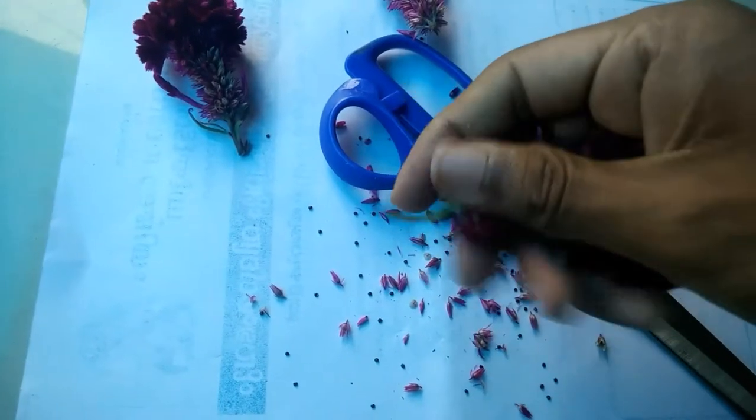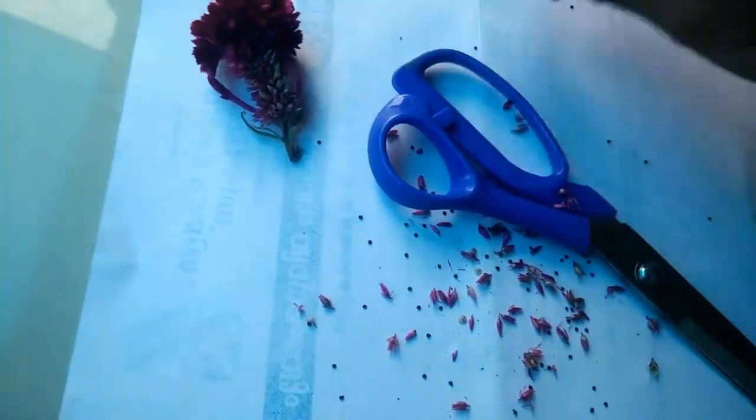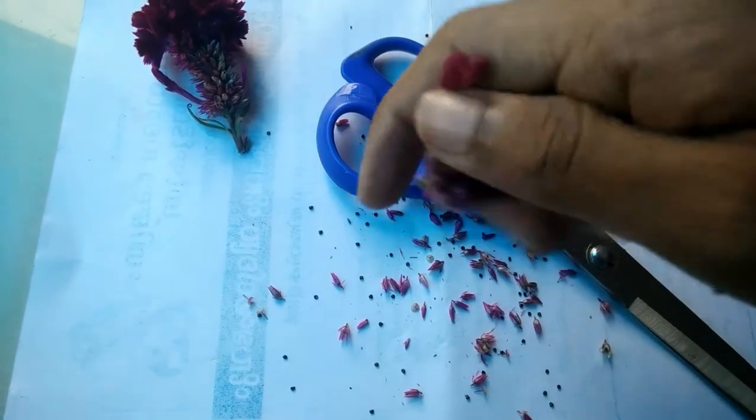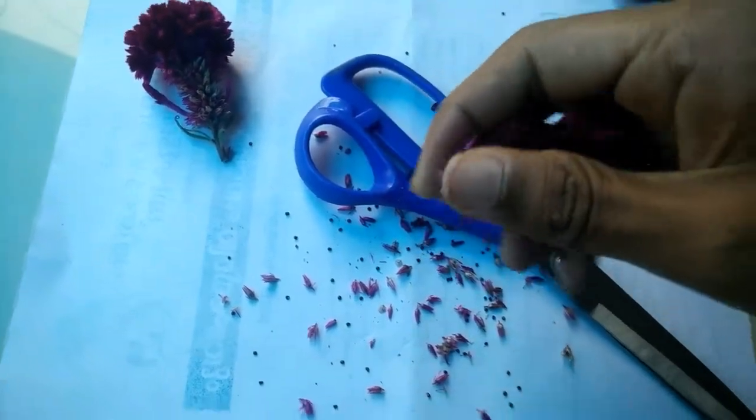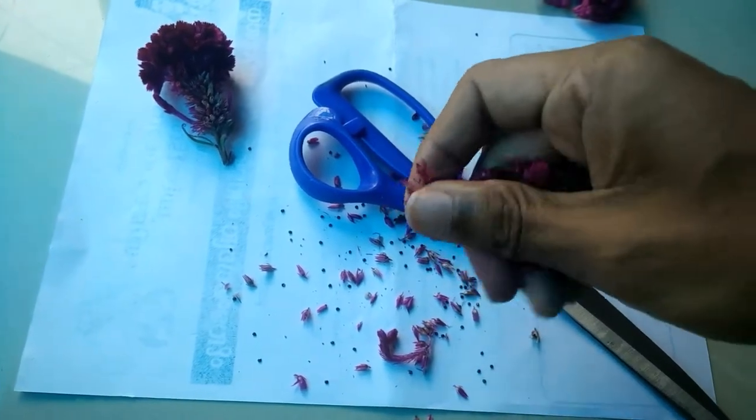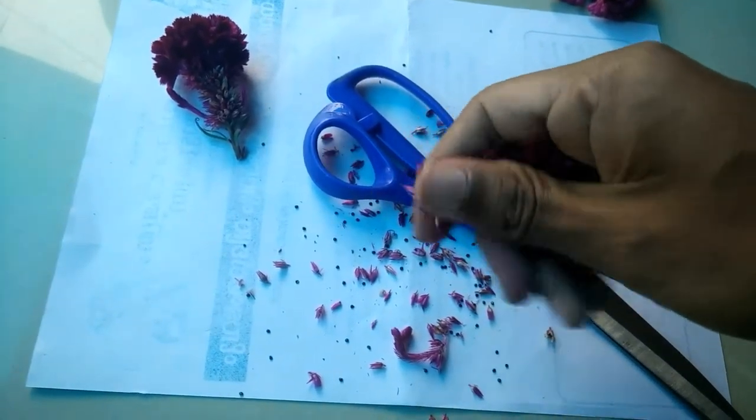You can see that there are black dots appearing on this white paper. Those are the seeds of the coxcomb plant. After collection, you can proceed to germination.